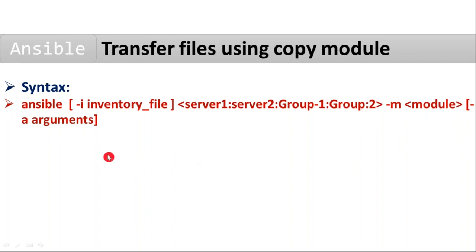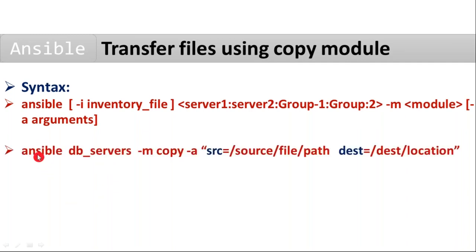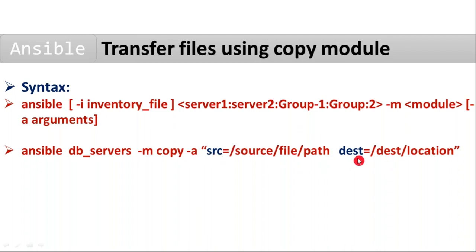Let me show you the simple syntax for your copy module. Simply: ansible, your required group from your inventory file, hyphen m copy module, hyphen a arguments. Here I have taken source and destination arguments. We need source and destination because you are going to transfer or copy a file from your Ansible engine to the required nodes. So source and destination are the arguments for your copy module.